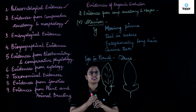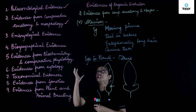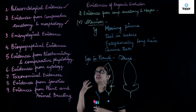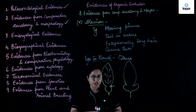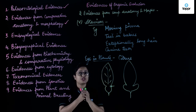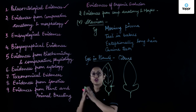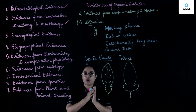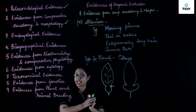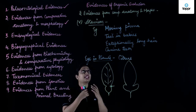In this lesson, we studied about evidences from comparative anatomy and morphology. We saw various evidences from organ systems, homologous organs, analogous organs, then vestigial organs, and lastly we discussed about atavism.